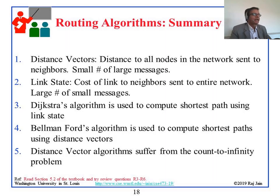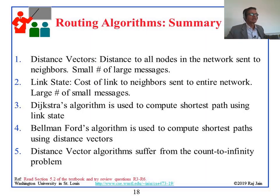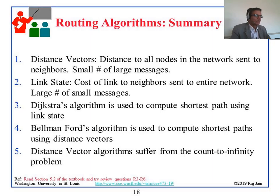To summarize the two algorithms: distance vector means you send big vectors to your neighbors; link state means you send little state to the whole world. Dijkstra is link state and Bellman-Ford is distance vector. Distance vector suffers from counting to infinity, so it is not commonly used anymore. It was used in a protocol called RIP — Routing Information Protocol — which now stands for Rest In Peace.